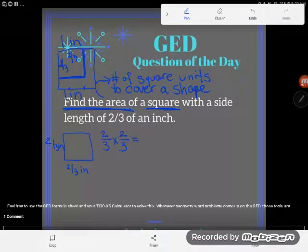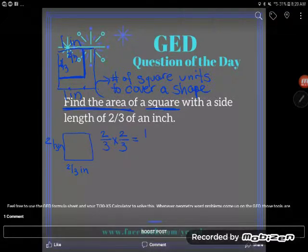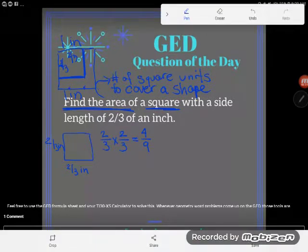And you could do this in your calculator if you want to, but you really don't need to because it's super simple to multiply fractions. Remember that you just cross-reduce if possible, and I can't, and then you just multiply numerator times numerator and denominator times denominator. So I get this answer, four-ninths.